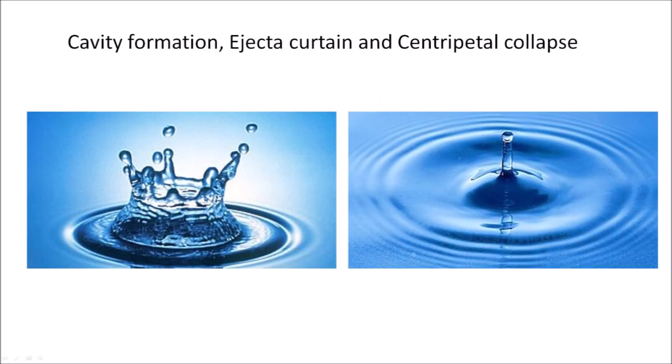An impact on water creates a cavity and an ejecta curtain. Tiny droplets form by surface tension at the edges of the ejecta curtain. When the energy of the impact stops pushing the water away from the projectile, the cavity in the water collapses toward the center, and the centripetal collapse creates an uplift in the center of the impact zone. When the column collapses, the process is repeated with less energy and forms concentric waves that expand from the point of impact.